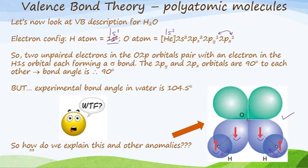The 2px and 2py orbitals are 90 degrees to each other, which implies the bond angle is 90 degrees. But we know very different information—the experimental bond angle in water is 104.5 degrees. So what is going on here? How do we explain this and other anomalies? We have to use some kind of theory that fits in with valence bond theory to help us understand what is happening.